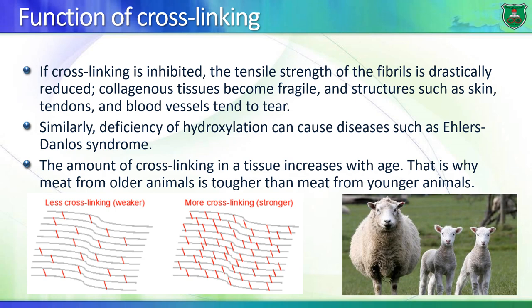If crosslinking is inhibited, the tensile strength of the collagen molecule is drastically reduced, and it cannot protect or maintain the tissue. Tissues that depend on collagen, like skin and blood vessels, would be easily torn. Also, if there is deficiency in hydroxylation — whether of lysine or proline — that would cause certain conditions such as Ehlers-Danlos Syndrome.